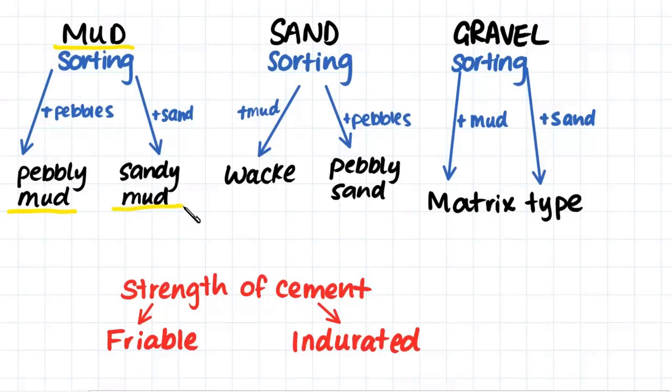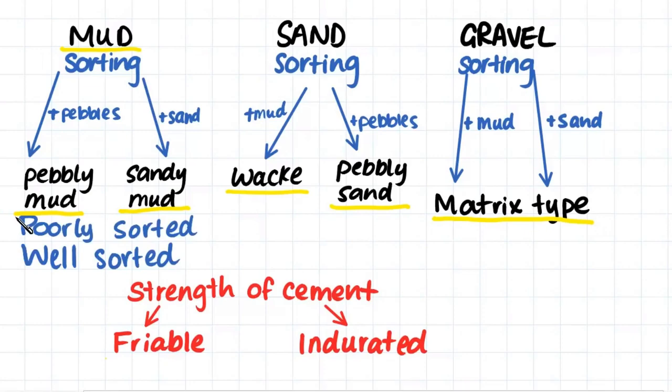A sandstone with mud we would call a wacky, and a sandstone with pebbles would be called a pebbly sandstone. When we're talking about a conglomerate, which has mostly gravel-sized particles, the mud and sand that is added just tell us what type of matrix is gluing the gravel clasts together. These are the terms we use when we're talking about sedimentary rock which is poorly sorted.